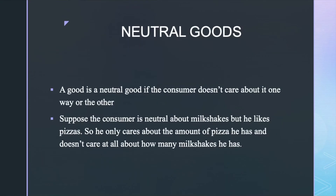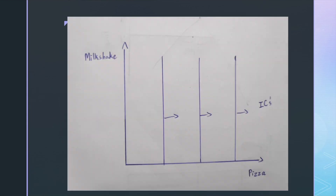Now let's move on to neutral goods. A good is a neutral good if the consumer doesn't care about it one way or the other — neither does he like nor dislike it. Suppose the consumer is neutral about milkshakes but likes pizzas. He only cares about the amount of pizza he has and doesn't care at all about how many milkshakes he has. The more pizzas the better, but adding more milkshakes doesn't affect him. In the figure, the ICs are vertical lines, because he doesn't care about milkshakes but does care about pizzas, and ICs to the right give more satisfaction as his pizza consumption increases.